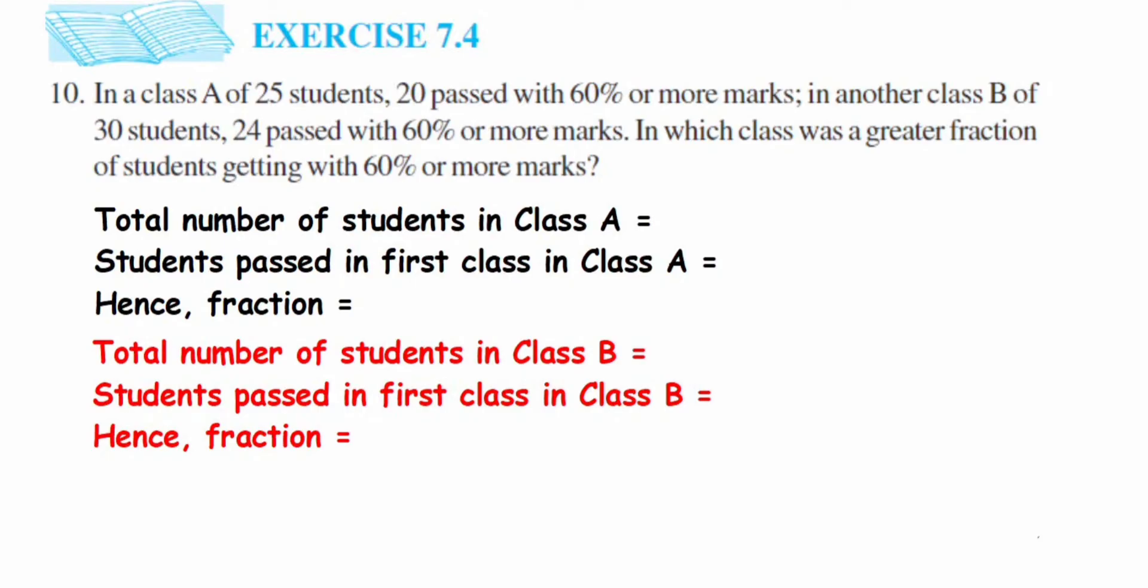Hey everyone, so here is Exercise 7.4, 10th question. This is the last question in this exercise, from the fraction chapter of class 6. The question is: In a class A of 25 students, 20 passed with 60% or more marks. In another class B of 30 students, 24 passed with 60% or more marks. In which class was a greater fraction of students getting 60% or more marks?